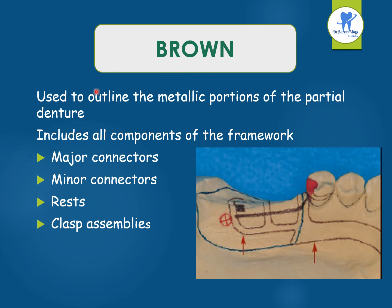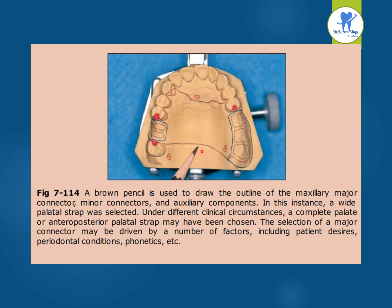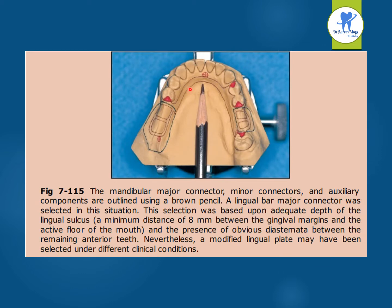What does the brown colour denote? It denotes the metallic portions of the partial denture. It includes all the components of the framework: major connector, minor connector, rest and clasp assembly. These are denoted by the colour brown. The brown pencil is used to draw the outline of the maxillary major connector, the minor connectors and also maxillary auxiliary components. In this situation, the lingual bar major connector was selected.